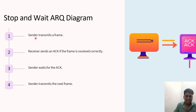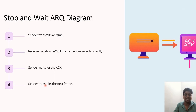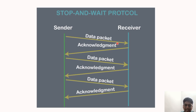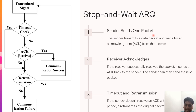The process starts with the sender transmitting a frame. If the receiver sends an acknowledgement, it means the frame was received correctly. The sender has to wait for the acknowledgement, and after receiving it, the sender transmits the next frame. Since the window size is one, the sender sends one packet at a time. If the receiver successfully receives the packet, it sends an acknowledgement to the sender, after which the next packet is sent.